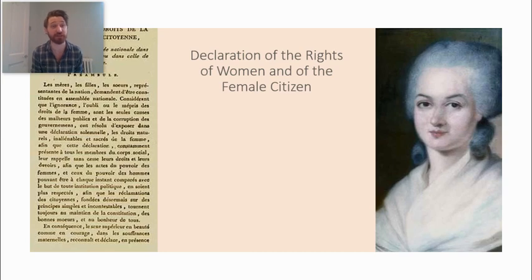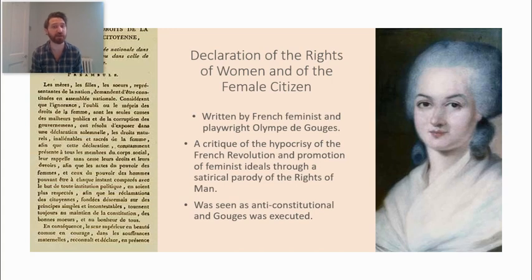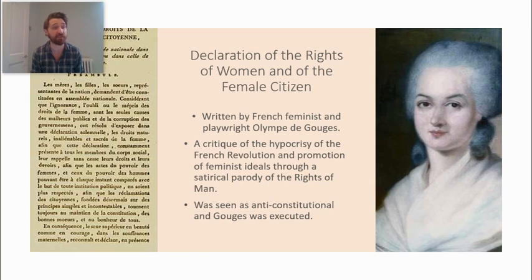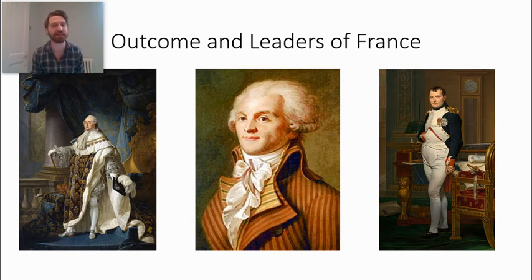One of the most famous examples of this is to do with gender. Many historians believe the French Revolution was not so much about class but almost gender — it was about male rights. A satirist and philosopher called Olympe de Gouges produces the Declaration of the Rights of Women and of the Female Citizen, which is essentially the same document but every time the word 'man' appears in the declaration, it is replaced by 'woman.' This is to highlight how the French Revolution does not translate into women's rights. And as a result of this, de Gouges is executed for her radical ideas.